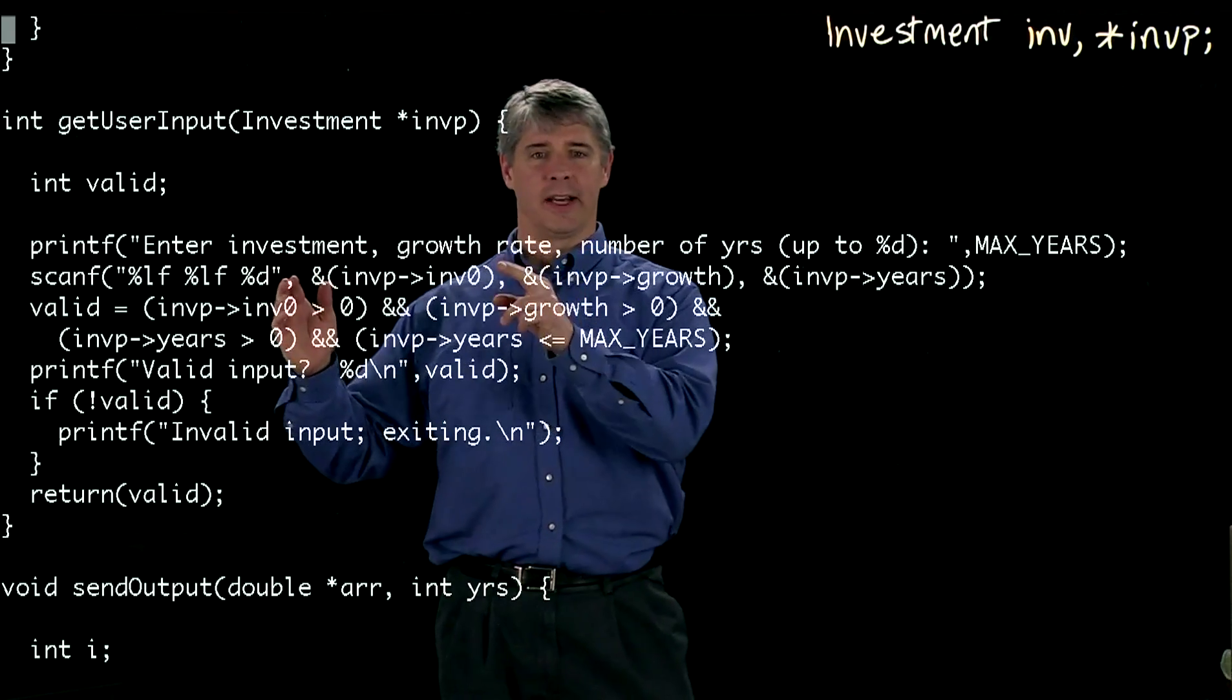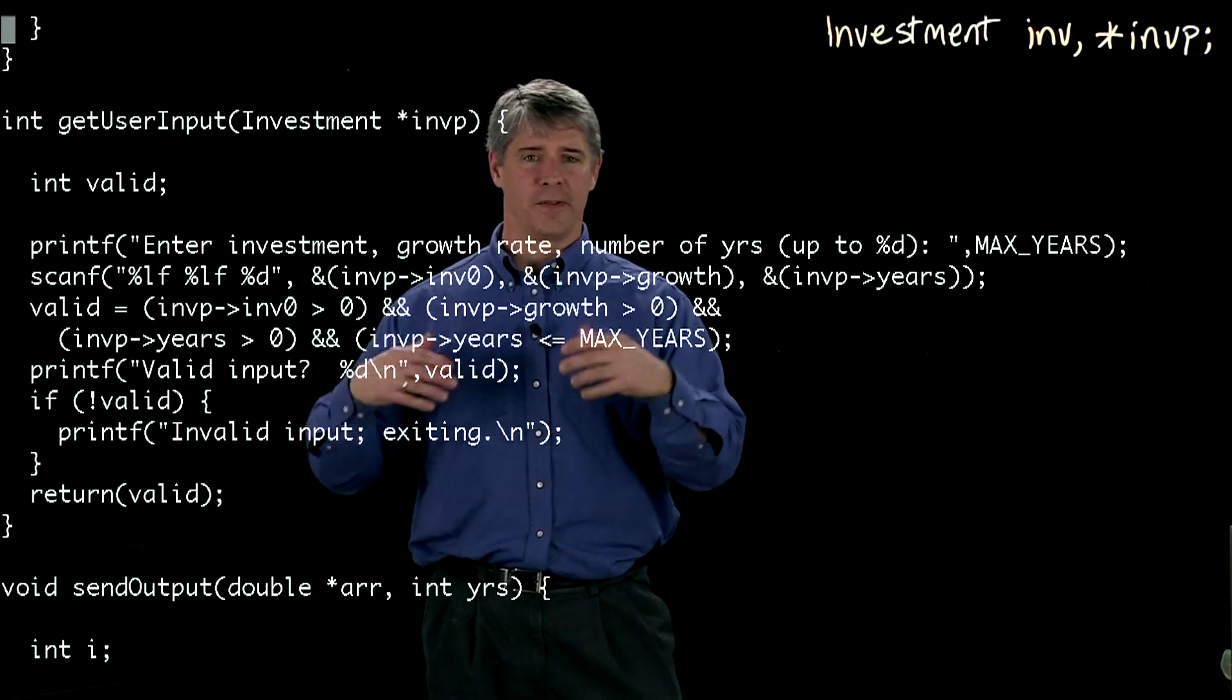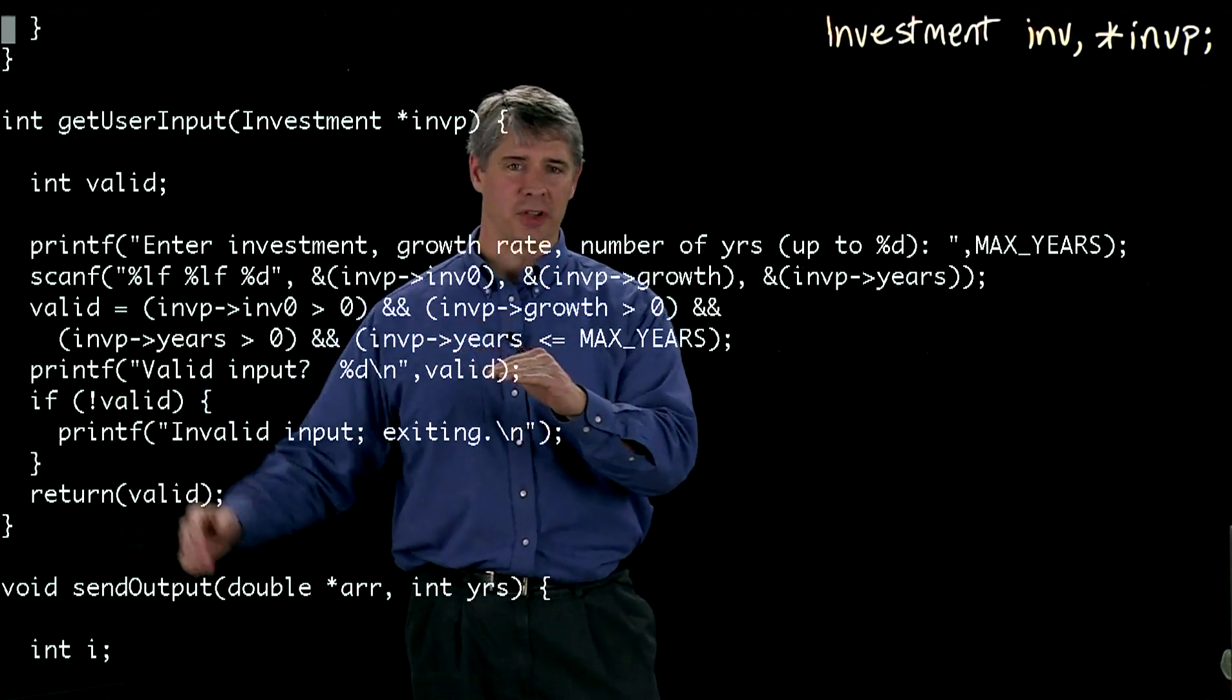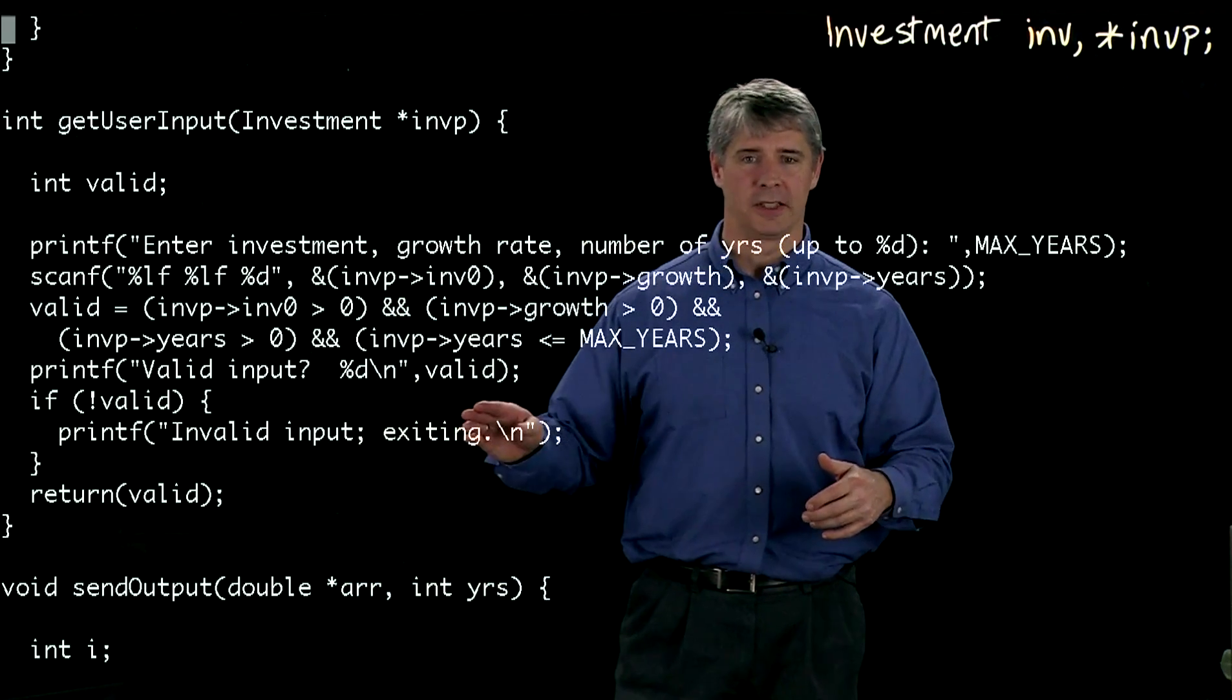So we take one and one and one and one. True and true and true and true. So valid is true. So valid gets a value of one. And then we print out just to show you that valid, that valid takes the value zero or one. We print it out to the screen.